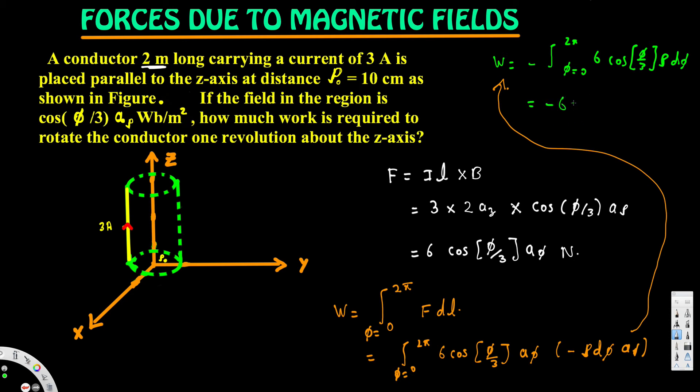...we have ρdφ. Now if we do the integration, this 6 is a constant, so this is just going to move to the front, and then we have ρ. That's also constant because we are integrating with respect to φ, so this is the only angle, this is the only thing that's going to change. cos(5φ/3)...